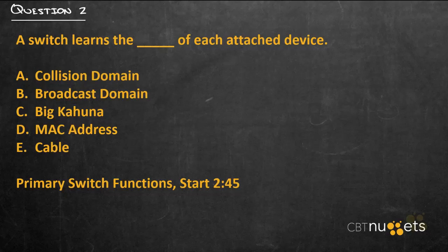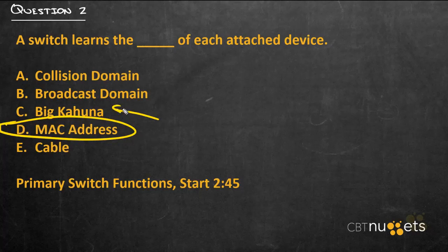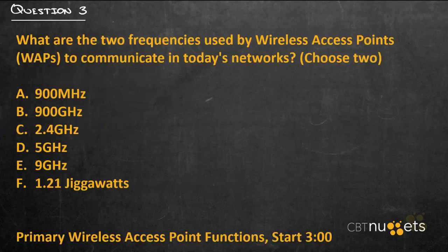Question number two: a switch learns the blank of each attached device. The answer is D — the MAC address. That is actually a layer two address, talking about the OSI model, that the switch learns as soon as the device begins to communicate. The other options are functions of a switch but have nothing to do with what the switch learns.